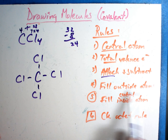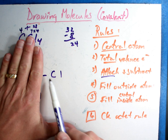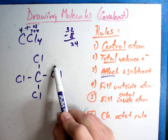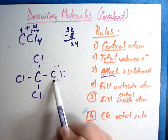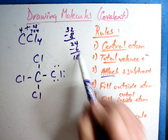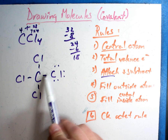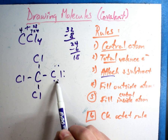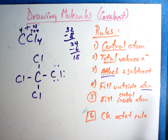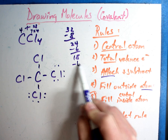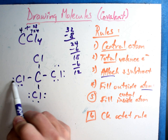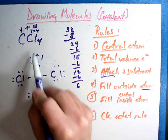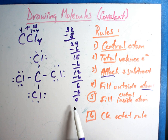Rule number four says fill the outside atoms. That chlorine right now has two electrons from the bond, so he needs six more to be full. Filling each chlorine with six more dots brings the count down. Each chlorine needs six more: down to eighteen, then twelve, then six, then zero. You should get a zero every time - every time. After filling all four chlorines, I'm out of electrons.